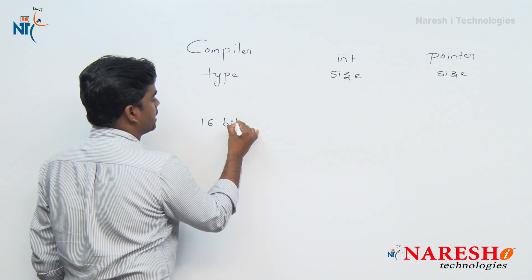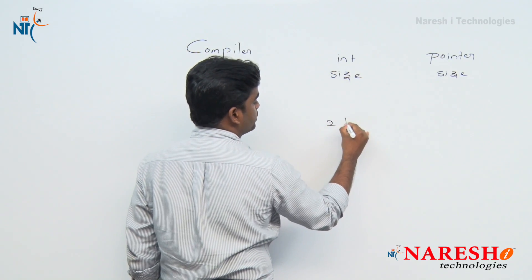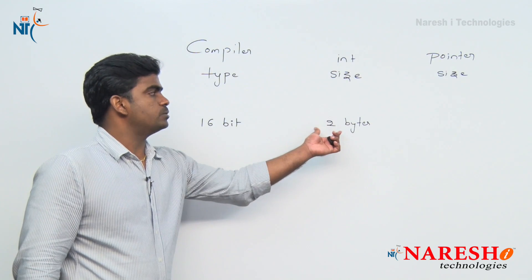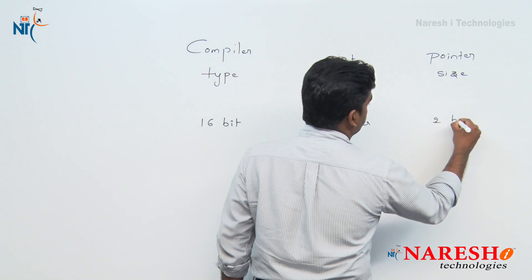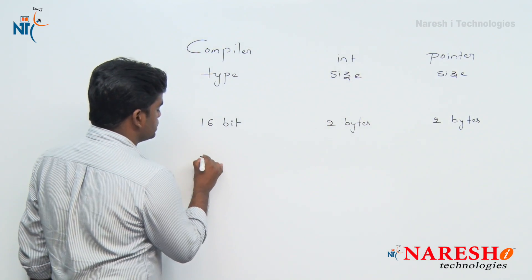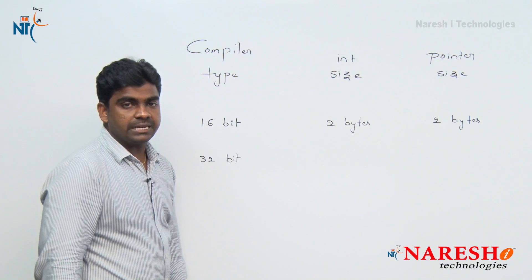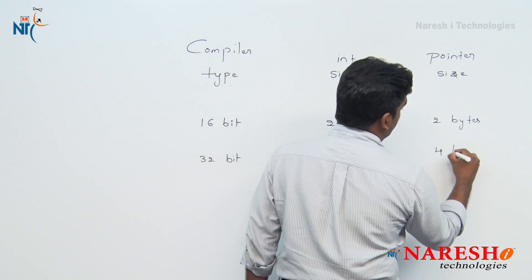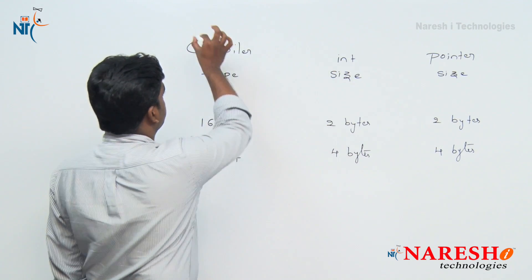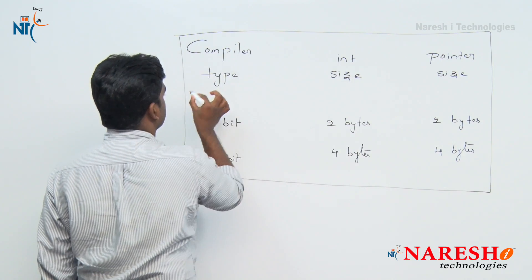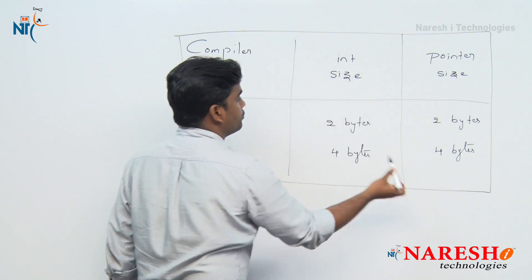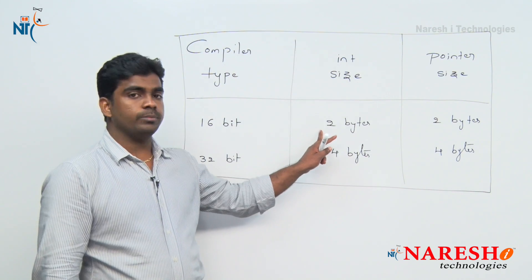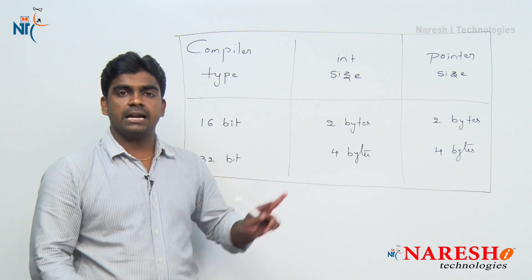If you are using a 16-bit compiler, integer occupies 2 bytes memory because 8 bits equals 1 byte, so 16 bits equals 2 bytes, and pointer size is also 2 bytes. If you are using a 32-bit compiler, integer occupies 4 bytes (4 × 8 = 32), and pointer size is also 4 bytes. So integer and pointer sizes both are the same, and both depend on the compiler type.